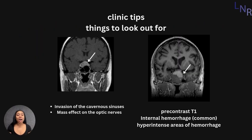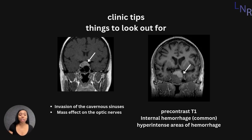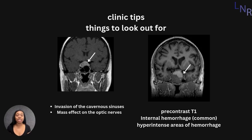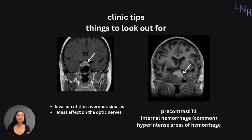Some clinical tips to look out for when you're on the wards: you can see invasion of the cavernous sinuses in pituitary adenomas, as indicated by the arrow in the image on the left side of the screen. Also, if a patient presents with loss of eyesight in the peripheral view, you can suspect a pituitary adenoma, as these can cause mass effects on the optic nerves and vision loss specifically in the peripheral view.